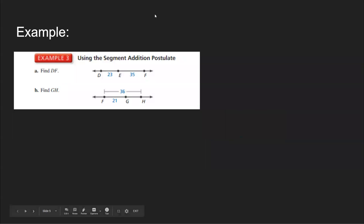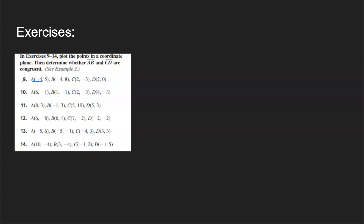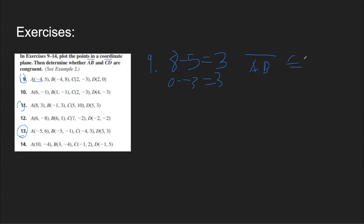Let's get to the exercises — I'll do the odd numbers. Instead of just graphing, you can do it mathematically. For points A and B, their x-values are the same, so just find the difference between the y-values: 8 minus 5 equals 3. For points C and D, their x-values are also the same, so 0 minus negative 3 equals 3. Since 3 equals 3, segment AB is congruent to segment CD.